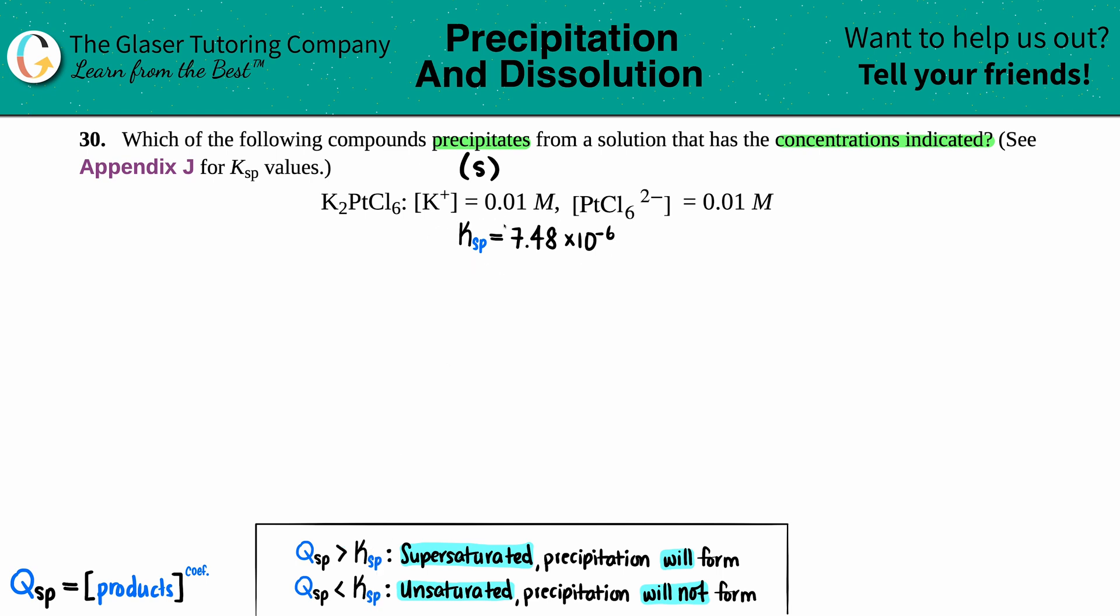I went to the back of the textbook to find out what the Ksp value is of K2PtCl6. In this case we just have to find the Qsp, which is the same as finding a regular Ksp, and then we just compare the two numbers.